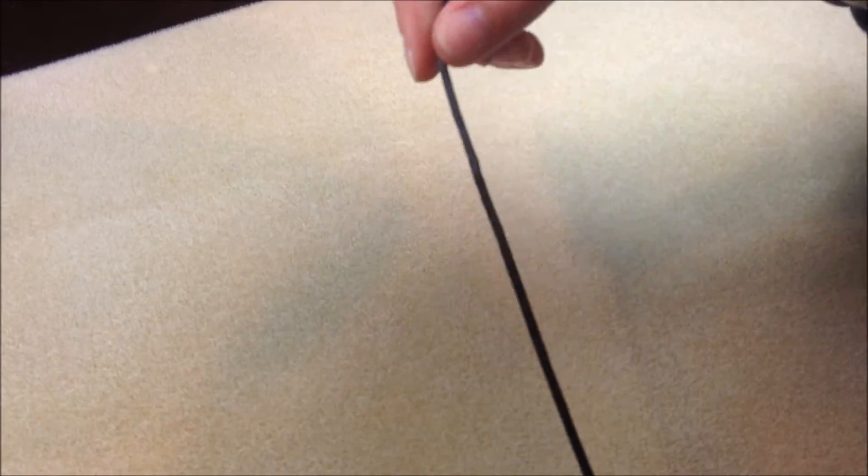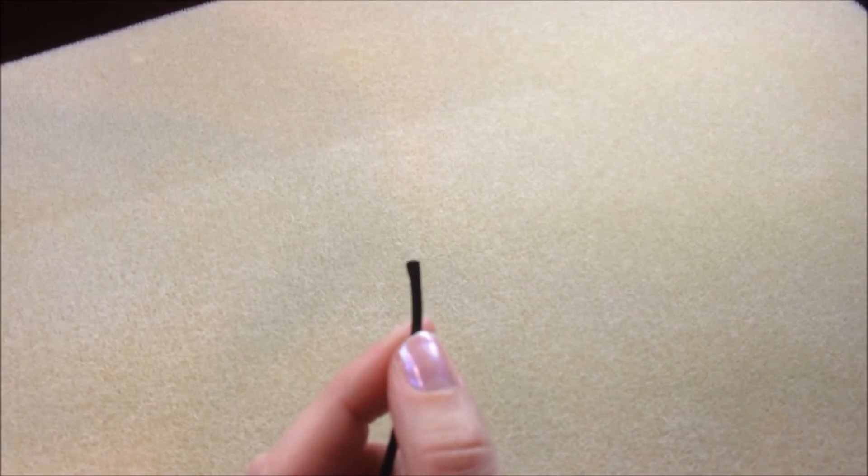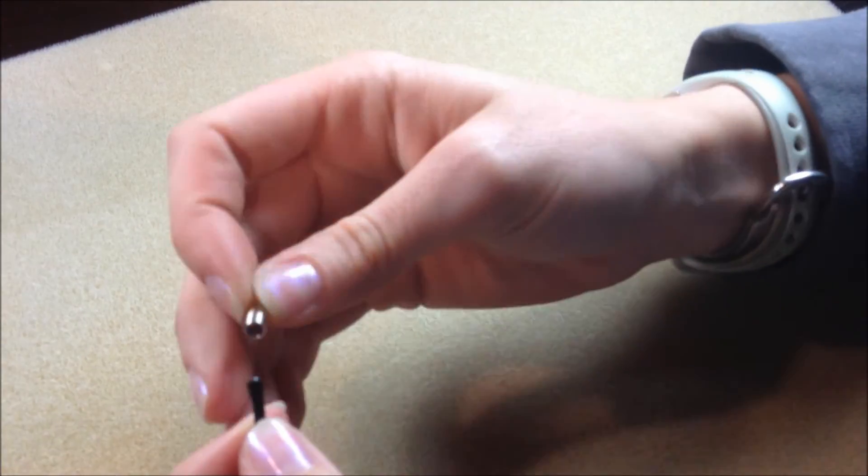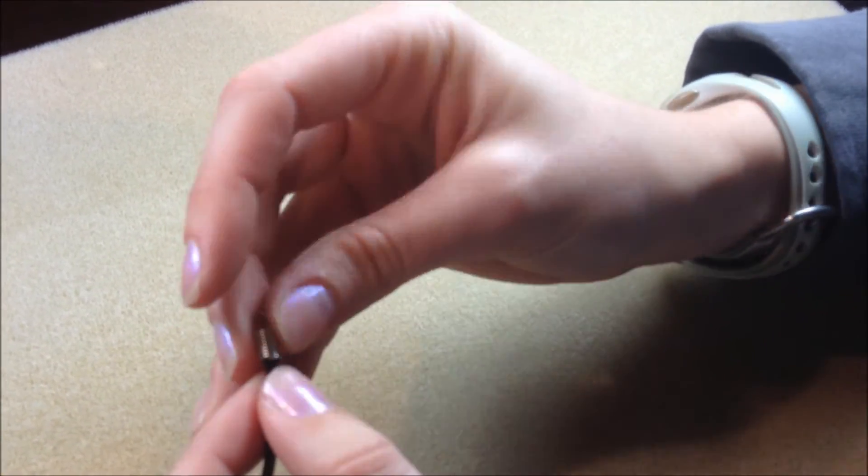The other type of cording end that you can use is a spring ring end. What this is is just a collection of wire that's been coiled around. The cording is going to fit into this and then that last piece of cording, again a little glue would help.